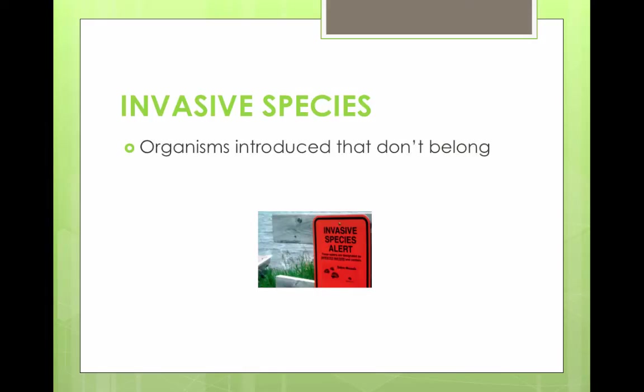Invasive species are organisms introduced to an ecosystem that don't belong there — they're outside of their native range. More diverse communities are more resistant to invasive species, while less diverse communities are more susceptible to them.